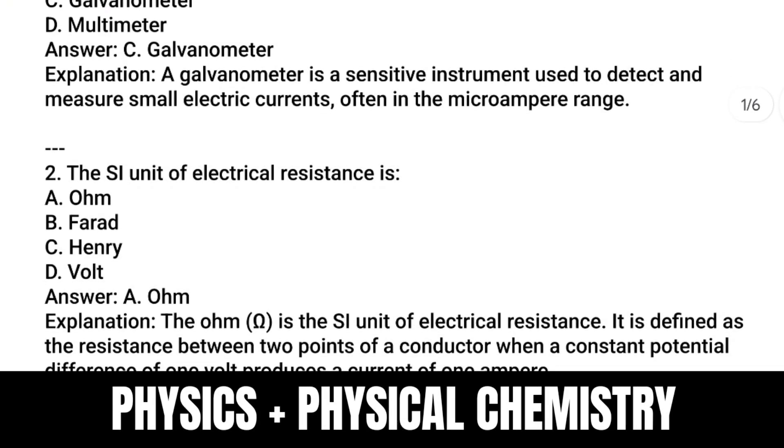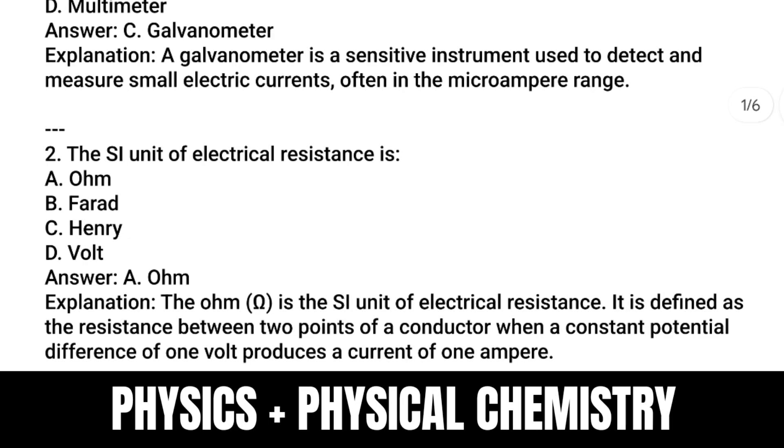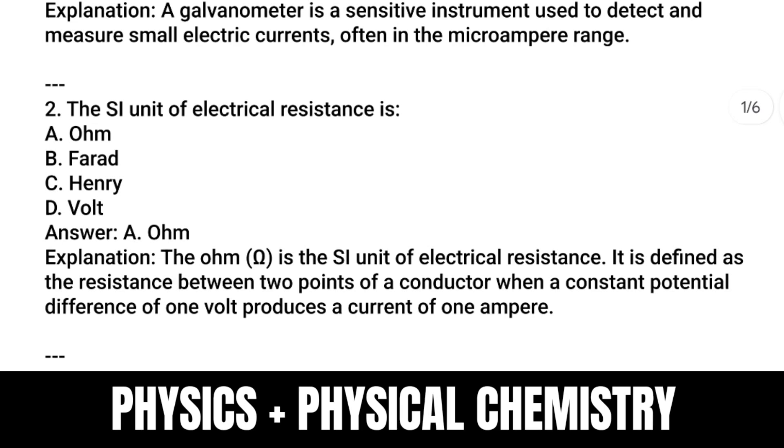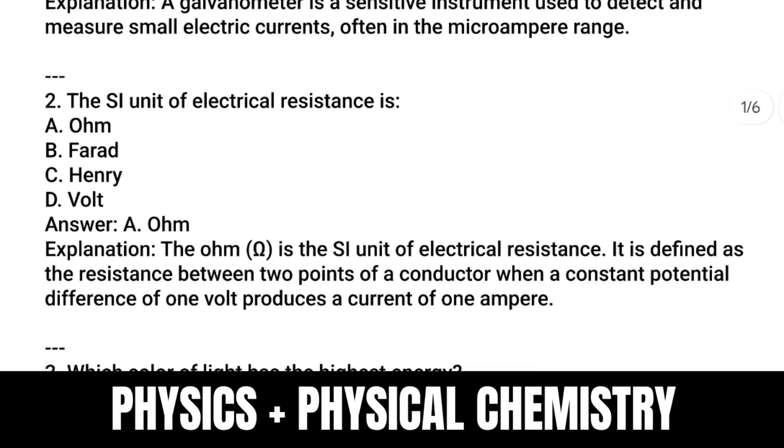Second question: What is the SI unit of electrical resistance? Answer is Ohm. The Ohm is the SI unit of electrical resistance. It is defined as the resistance between two points of a conductor when a constant potential difference of one volt produces a current of one ampere.